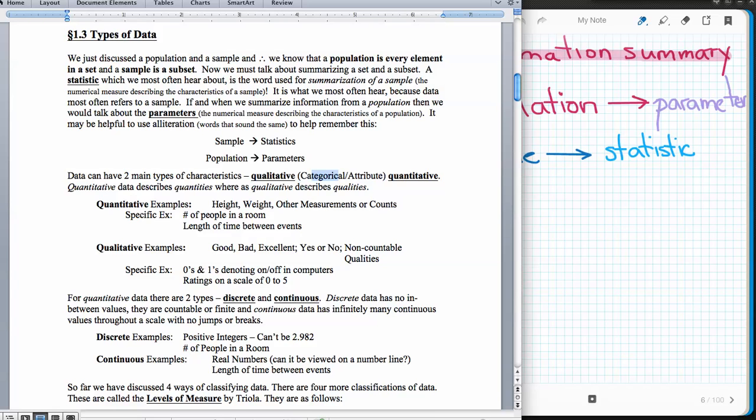Qualitative data describes qualities. It's names, and that's why your book is starting to use categorical, because it has categories for it. Or another word is attributes. Quantitative data examples: height, weight, other measurements, or counts. Specific examples would be the number of people in the room or the length of time between events.